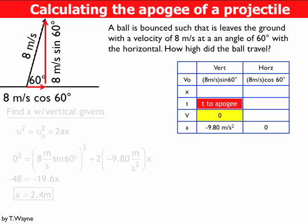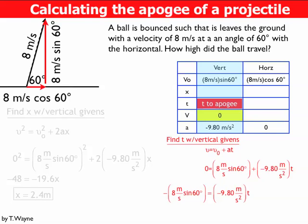So I've got the initial velocity, t, the final velocity and a. I need a relationship that describes all these variables. I'm going to use the equation v equals v0 plus at. Plugging in my numbers, I find it's 0.71 seconds. So it took the ball 0.71 seconds from where it started on the ground up to the highest point of the motion, or the apogee.